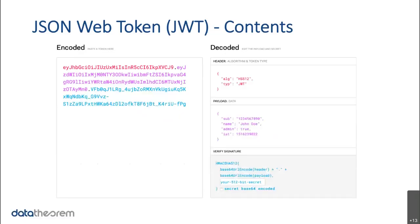So what does a JSON Web Token look like? It has a header that contains the type of token and the algorithm used for the signature hash. Then the payload, which contains the set of claims that include data such as the logged-in user, the user's role, etc. And finally, there's a signature that is appended to the end and is used to validate the contents of the token itself using the algorithm specified in the header, which can be encrypted with either a secret or a public key depending on the algorithm chosen.